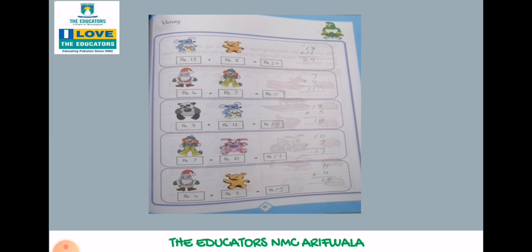3 में 1 plus करेंगे, 4. 1 plus 1 is 2. The answer is 24. 4 plus 7 is 11, 7 plus 4 is 11. 5 plus 3 is 13, is 18. 5 plus 3 is 8 and 1 is 18. 7 plus 10 is 17. 4 plus 11 is 15. 4 plus 1 is 5, and 1 is 15.